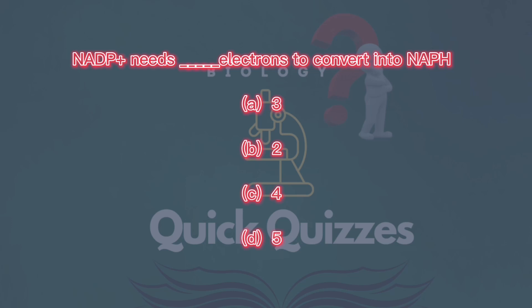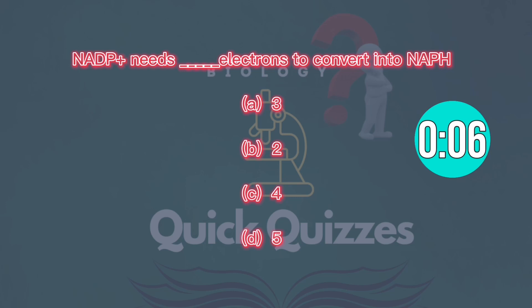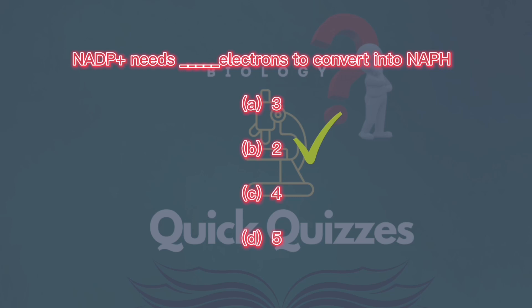NADP+ needs electrons to convert into NADPH. How many electrons does NADPH need? A) three, B) two, C) four, D) five. Correct answer: C, four.